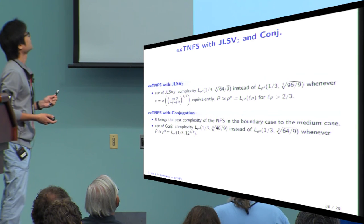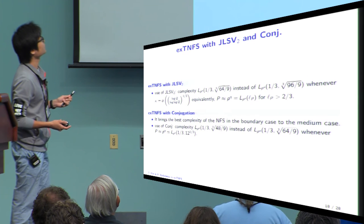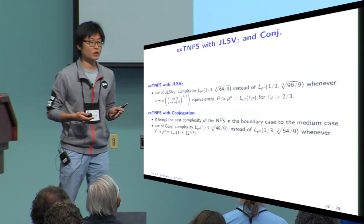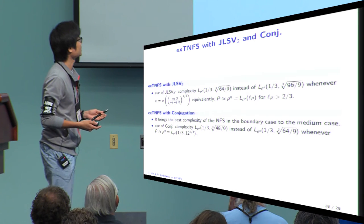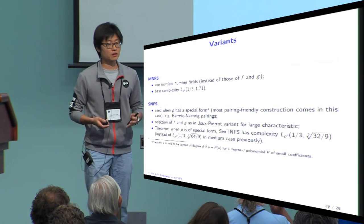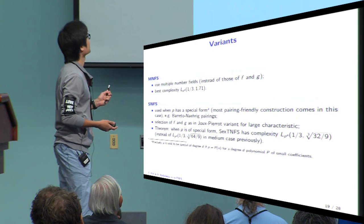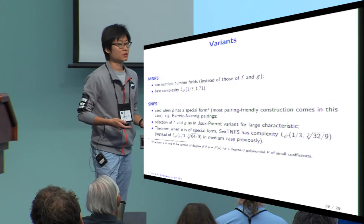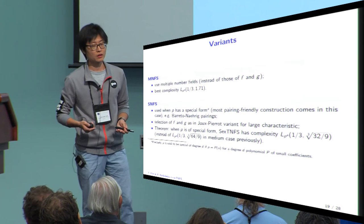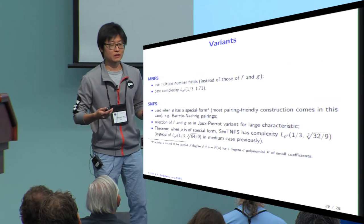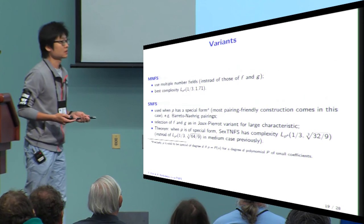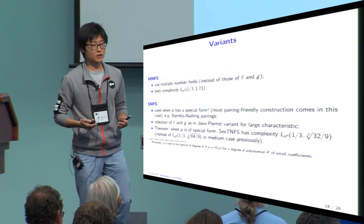As an example, EXTNFS with JLSV has a complexity of L[1/3, 64/9] instead of L[1/3, 96/9] in the medium characteristic case. And EXTNFS with the conjugation method has a complexity of L[1/3, 84/9]. We can also apply EXTNFS to other variants, like multiple NFS and special NFS. For special NFS, we use a characteristic P of special form, which mostly occurs in pairing-based constructions like the BN curve. In that case, special EXTNFS has a complexity of L[1/3, 32/9] instead of L[1/3, 64/9] in the medium case.